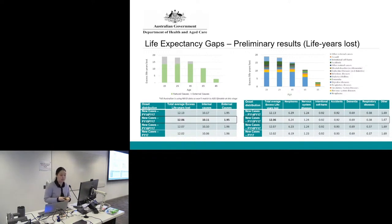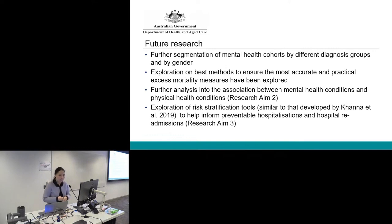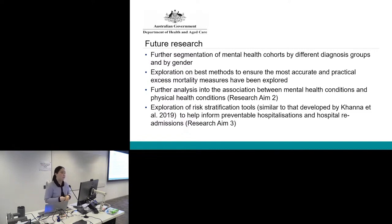In summary, our results are quite consistent with other national studies. In terms of future work, we plan to split by different diagnosis groups, and we are still searching for the most accurate and practical excess mortality measures. We also plan to do a risk factor analysis to give more insight into the association between mental and physical health conditions, as well as risk stratification tools to help inform preventable hospitalisations and hospital readmissions.